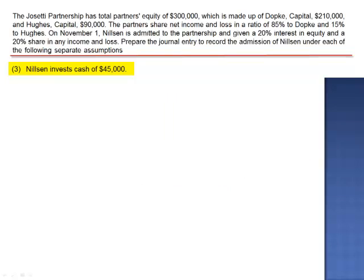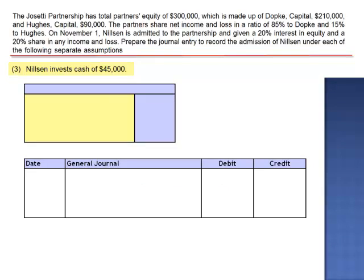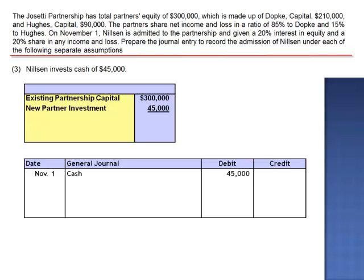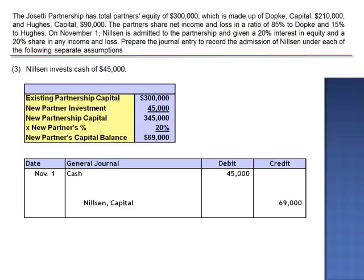Part 3 assumes that Nilsen invests cash of only $45,000. The old partnership capital and asset base was $300,000. Nilsen invests $45,000 in cash, which is received by the partnership, bringing assets and equity up to $345,000. Nilsen owns 20% of the new partnership, and 20% of $345,000 is $69,000, so we credit Nilsen's capital account for $69,000. But since assets are only increasing by $45,000, total equity can only increase by $45,000, meaning we need to decrease the combination of Dopke and Hughes by a total of $24,000.